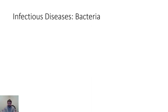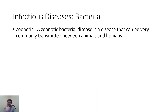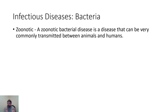Back to infectious diseases — specifically bacterial infections. First, we need to talk about the term zoonotic. Zoonotic diseases are diseases that can be transferred or transmitted between animals and humans. When we say something is zoonotic, it means that at least humans can get a variety of that disease. Sometimes we don't know enough about whether humans can get the exact species of a disease, so we call it zoonotic to be safe — better safe than sorry.